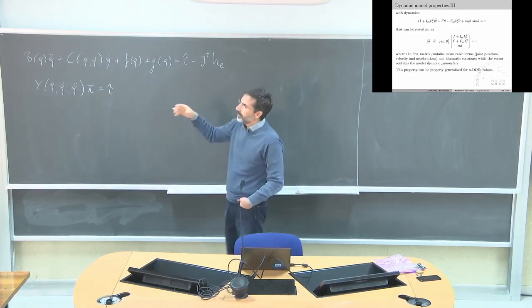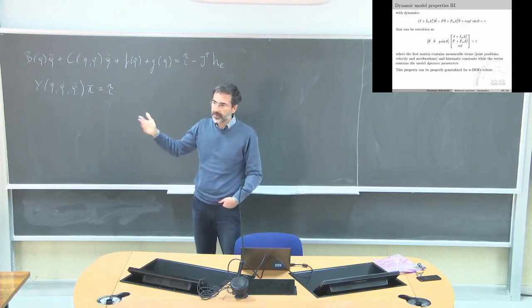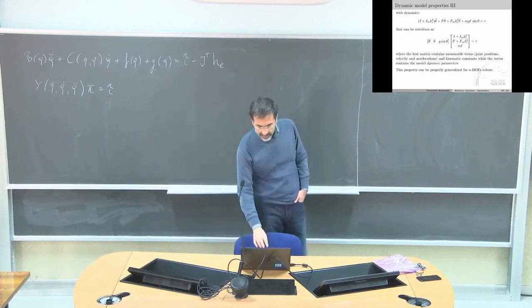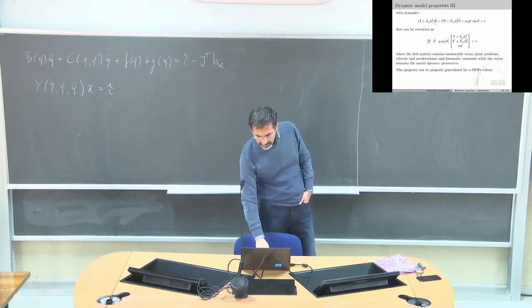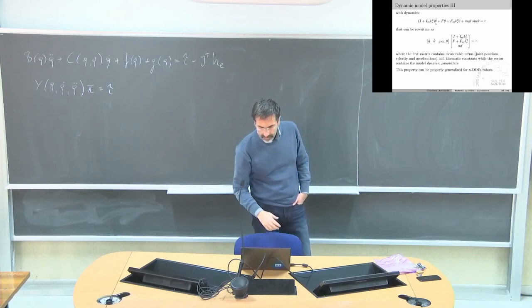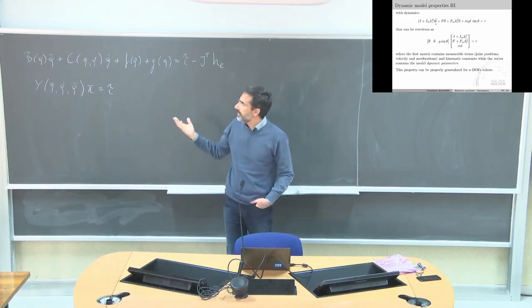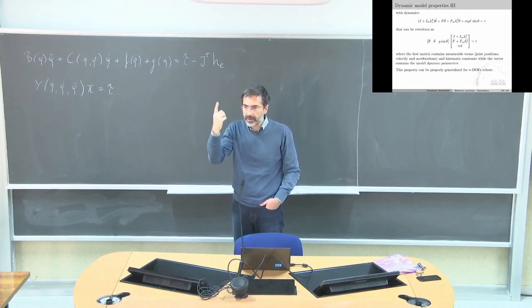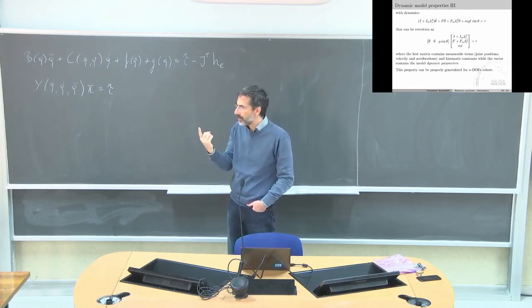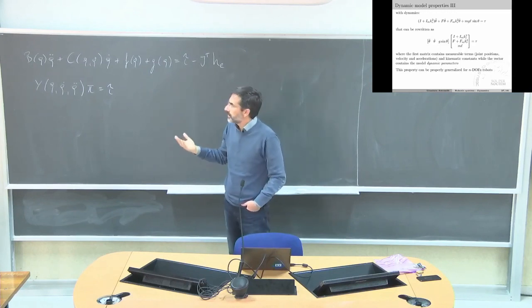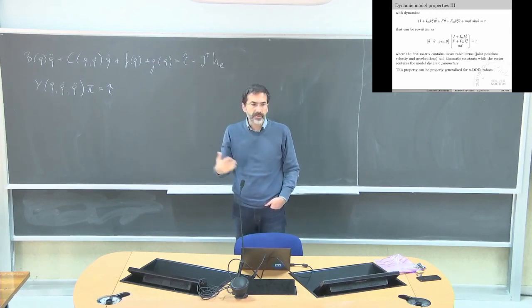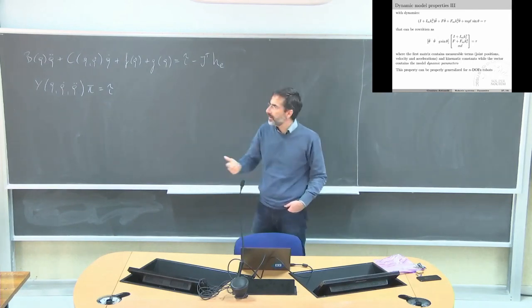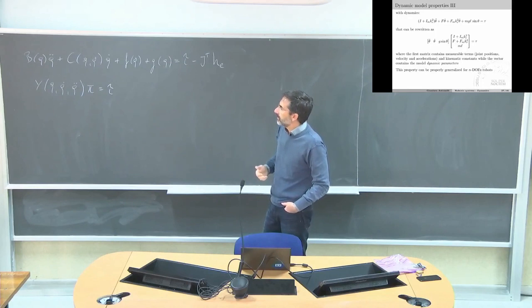Let us see again the example for the pendulum — the simplest robot we can obtain. Here we have the dynamics: mass times acceleration. The mass matrix is now one-by-one because the pendulum is a one-degree-of-freedom robot, so it's very simple. And it is not configuration dependent — it's not a function of the joint angle — because the pendulum is symmetric whatever the configuration.